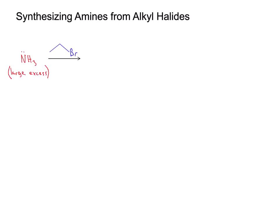Let's start with the direct substitution of an alkyl halide with ammonia. The lone pair on the nitrogen serves as a nucleophile and can attack the electrophilic alpha carbon on the alkyl halide. We're going to do an SN2 reaction and kick off that bromine leaving group when we attack the electrophilic carbon. The intermediate that we're going to get here is an ammonium salt.